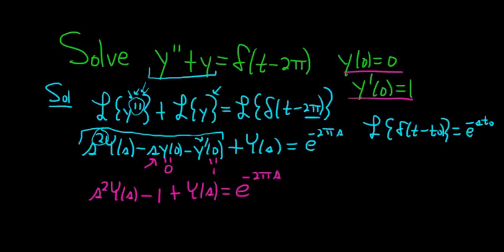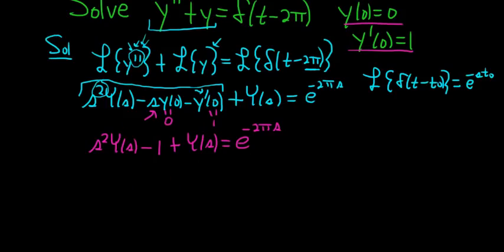And now we have to solve for big y of s. So let's do it. So it looks like we'll add the 1 to both sides and factor out big pitchfork y. So pitchfork y, or big y of s,